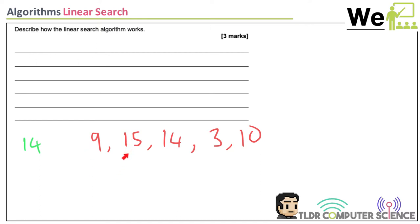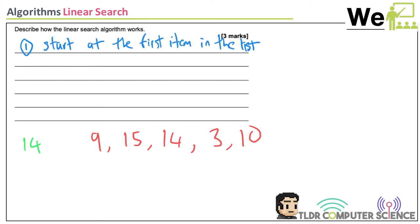The first point: start at the beginning of the list. The second point: compare your search term to the item to see if it matches. If matched, you've found it.